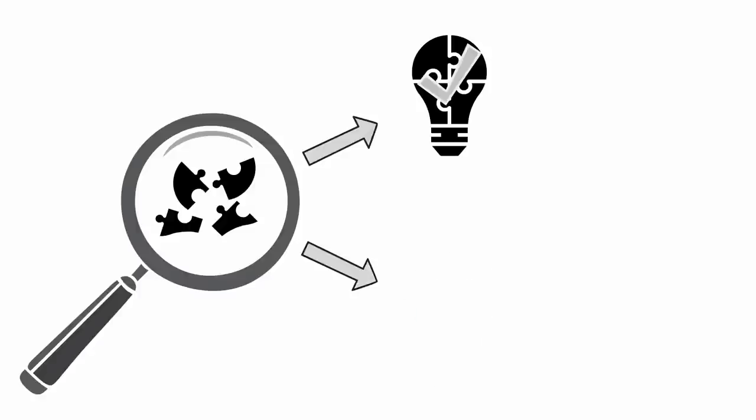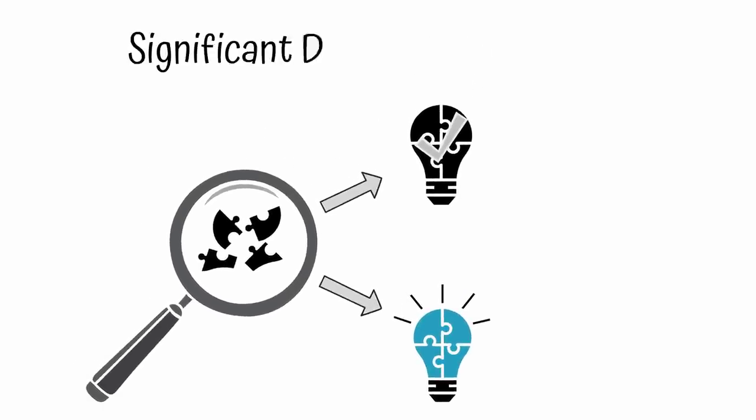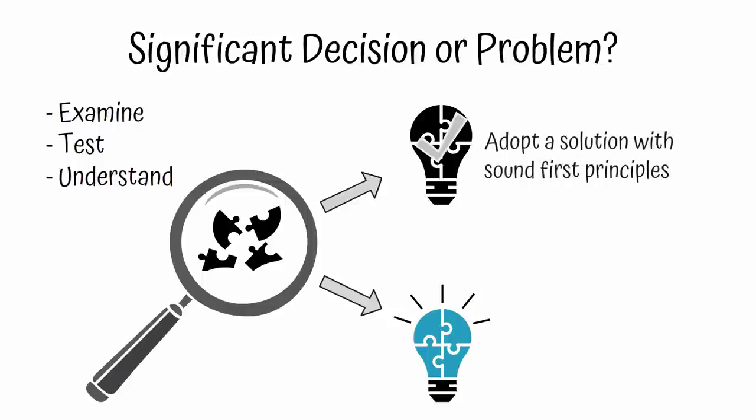If the career you're examining looks like a good fit, great. If not, look elsewhere or use the first principles you discovered to create a new career. The next time you're faced with a highly consequential decision or problem, use first principles thinking to examine existing solutions, test assumptions, and understand the fundamental components that make a solution work. Then either go with that solution or use those first principles to come up with a better solution.